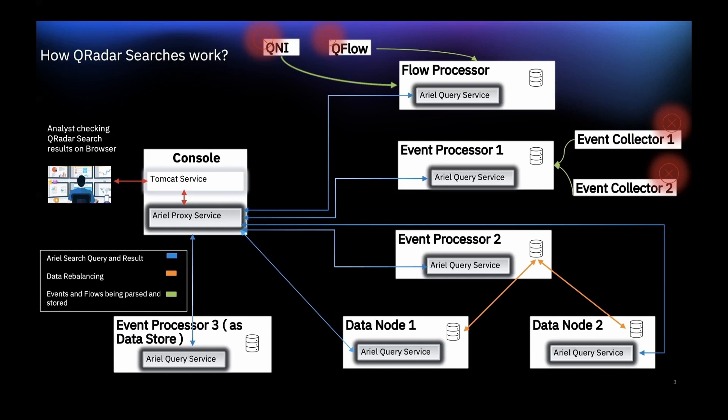In step one, the analyst starts a query in the Log Activity tab. In step two, the Ariel Proxy Service sends a search request to all Ariel Query services present in the deployment. In step three, the Ariel Query service aggregates the event and flow records on disk and sends that information to the console. In step four, the user is able to see the search results in the Log Activity tab.